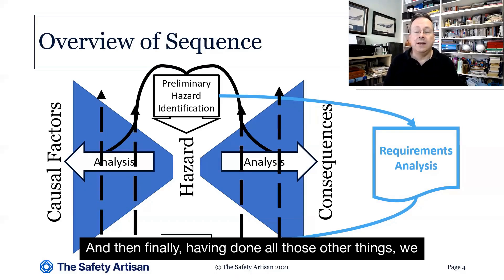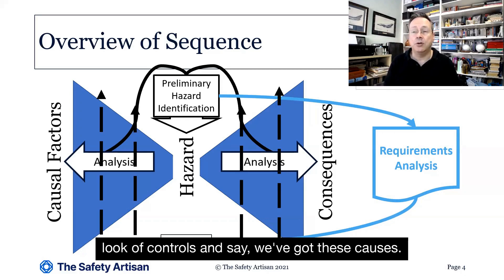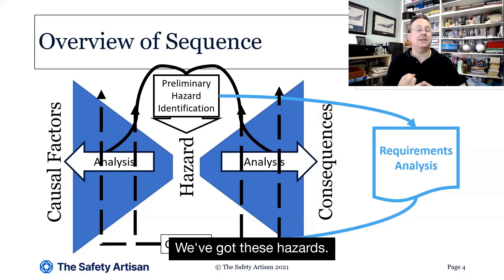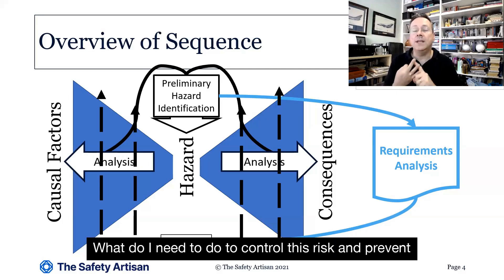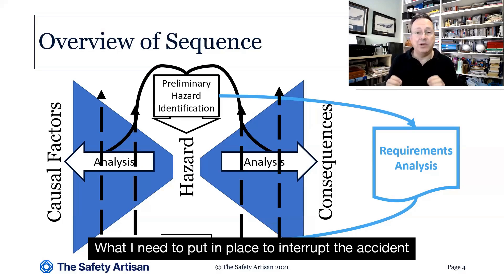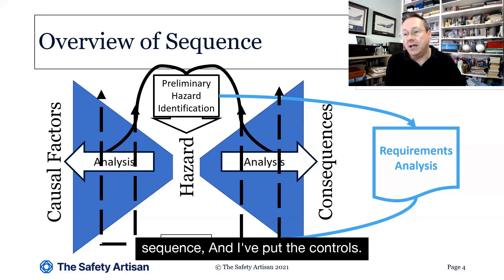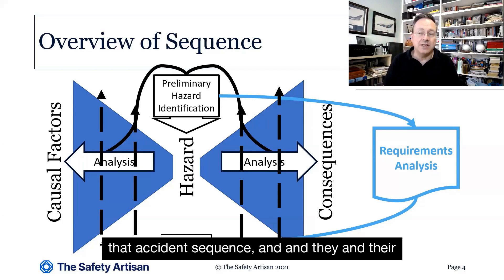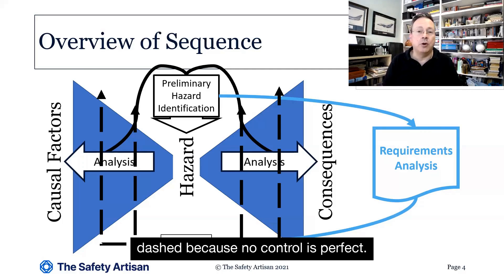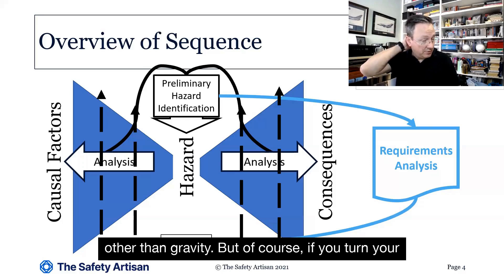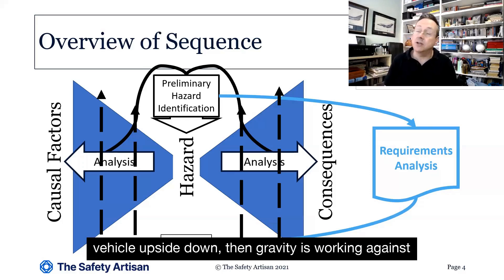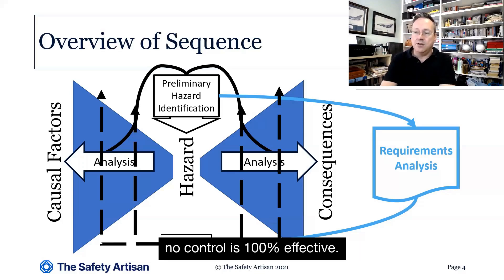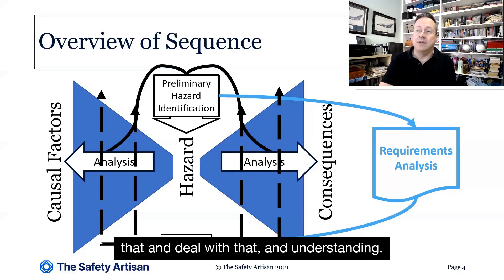And then finally, having done all those other things, we will be in a position to take a much more systematic look at controls and say: we've got these causes, we've got these hazards, we've got these potential consequences — what do I need to do to control this risk and prevent this accident sequence from playing out? What do I need to put in place to interrupt that accident sequence? The controls are shown as dashed lines, indicating barriers to that accident sequence. They're dashed because no control is perfect — other than gravity, but of course if you turn your vehicle upside down, then gravity is working against you. So even gravity isn't foolproof. No control is 100% effective.